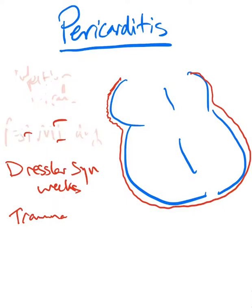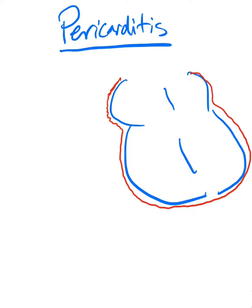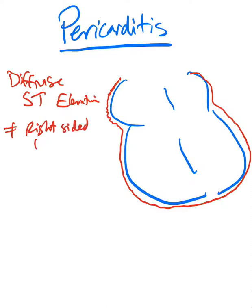Now, how can you diagnose pericarditis? This is a very common exam question. The patient would have diffuse ST elevations — and by diffuse I mean in all leads except the right-sided leads, which are V1 and AVR. If you see ST elevation in a patient essentially everywhere, and even ST depression in V1 and AVR, this is what we call diffuse ST elevation, and you should always think about pericarditis.